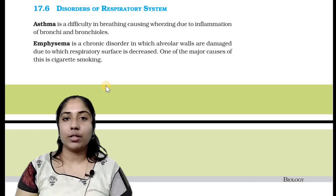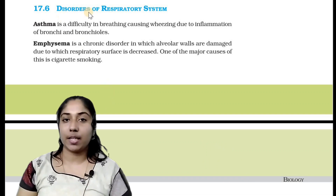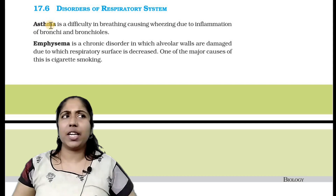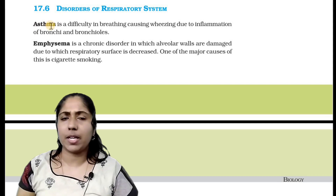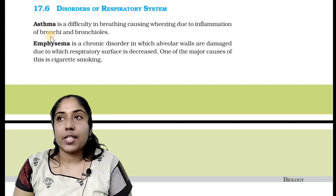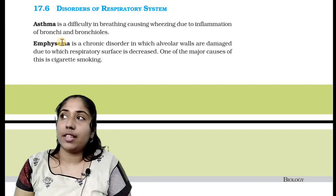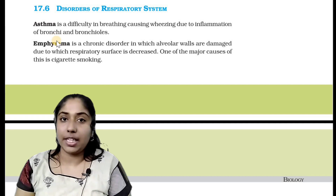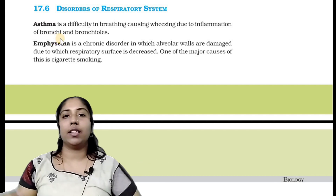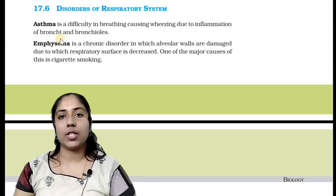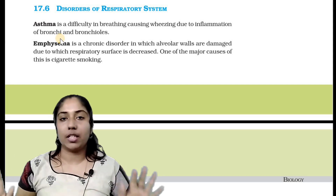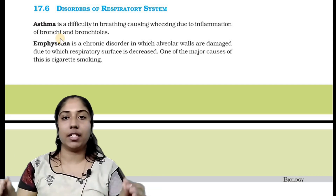The first disease of the respiratory system is asthma. What is asthma? What are the issues of the respiratory system? Any small issue in the respiratory system can cause breathing difficulty.